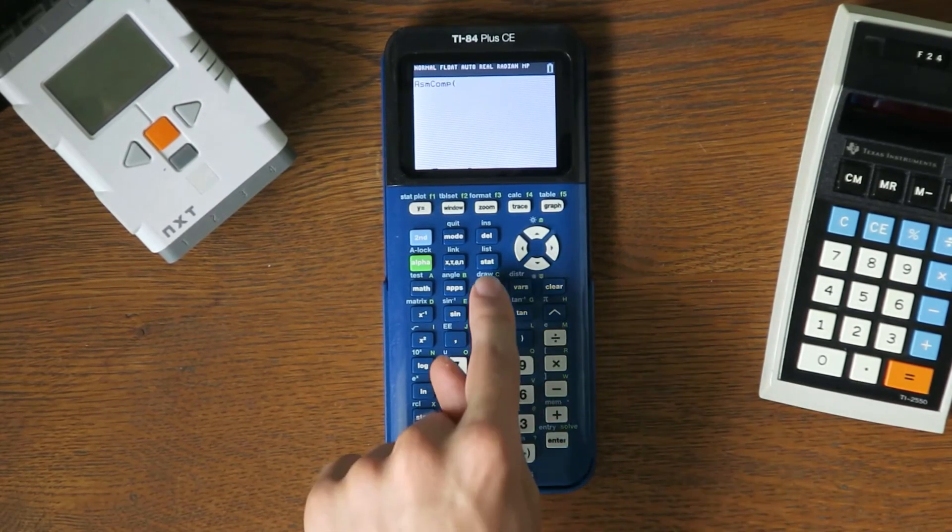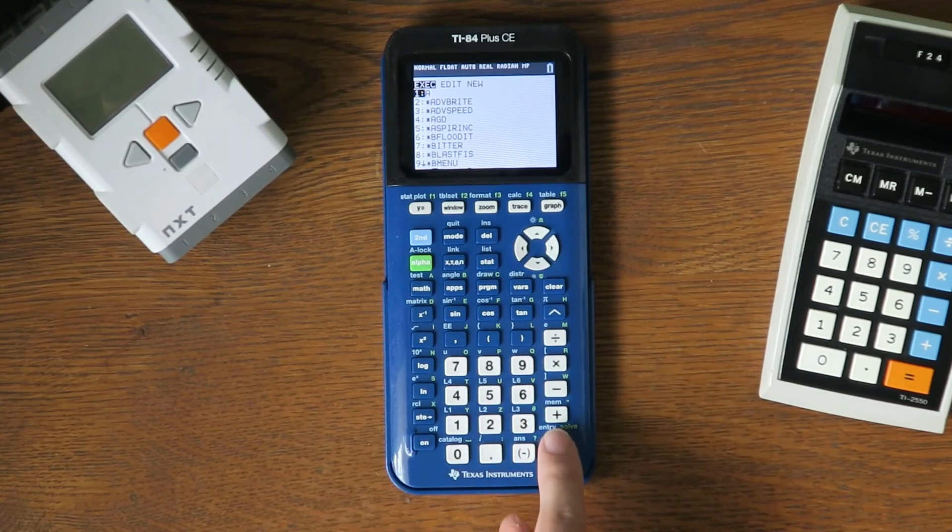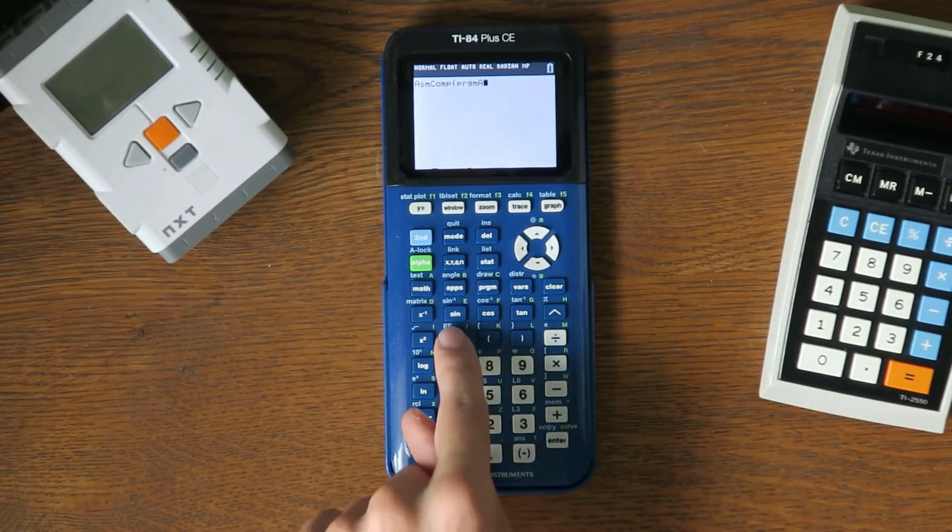Press Program, then select Program A. Now type in a comma and press Program again, and select Program A again.